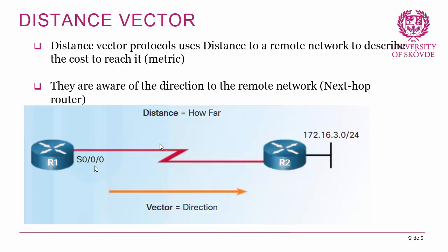Distance vector protocols use distance to the remote network to describe the metric, and they are aware of the direction to the remote network — namely the next-hop router. So if you're a router running a distance vector protocol, you will see a route and you will see a metric, but you will not be aware of the full path to reach the remote network — you will only know where to send it. In the picture here, if router one is receiving a packet going somewhere in the distance, it will only know that it's going to send the packet to R2, and then it won't really care what happens next.